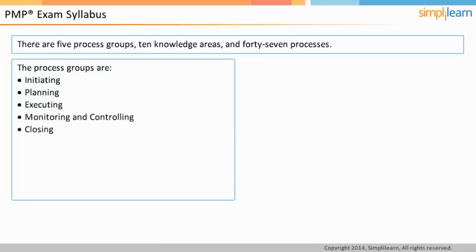Project execution and monitoring and controlling processes go hand in hand. When a new project is initiated, all processes of the project initiation process group should be applied. Similarly, when the project is being closed, all processes of the project closing group should be applied. For instance, identify risks is a process of the project planning group, so when the project is in planning phase, you must identify all the risks of the project.